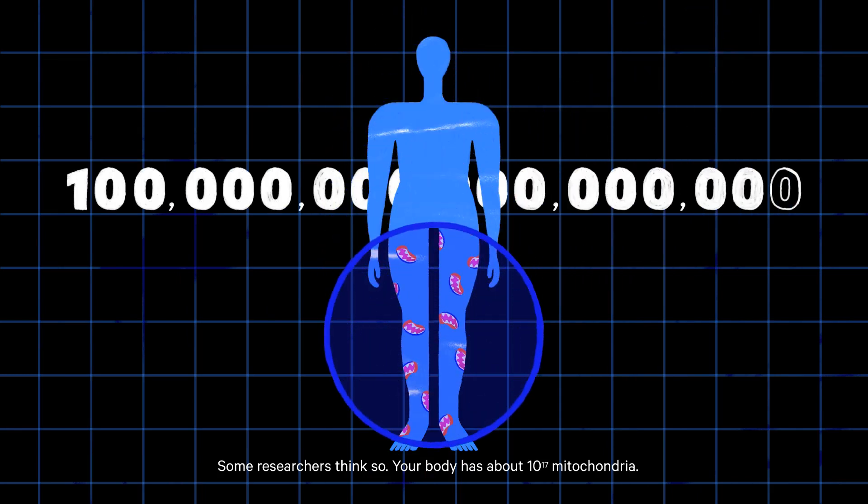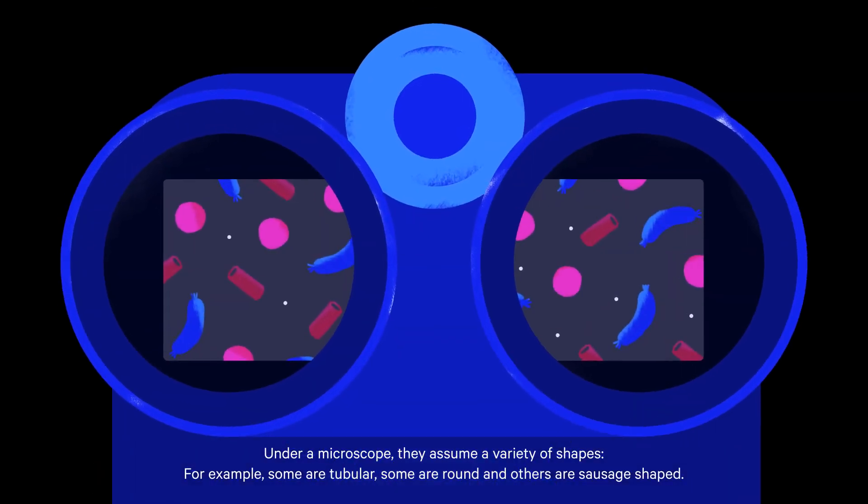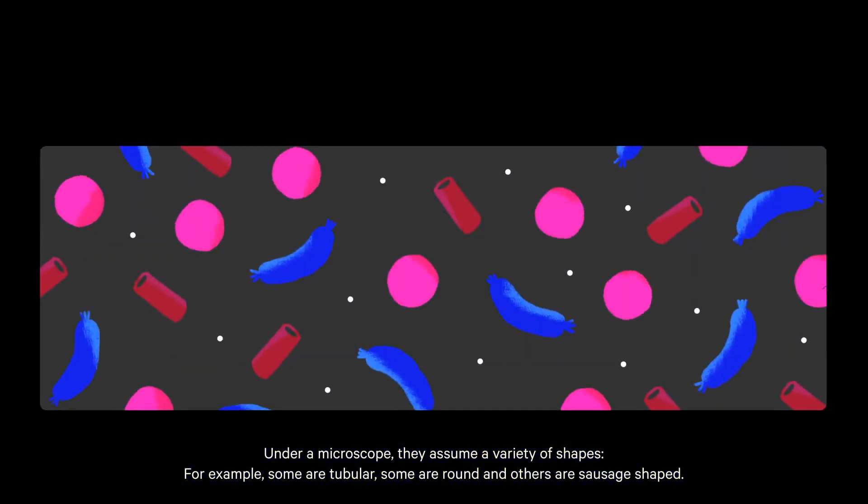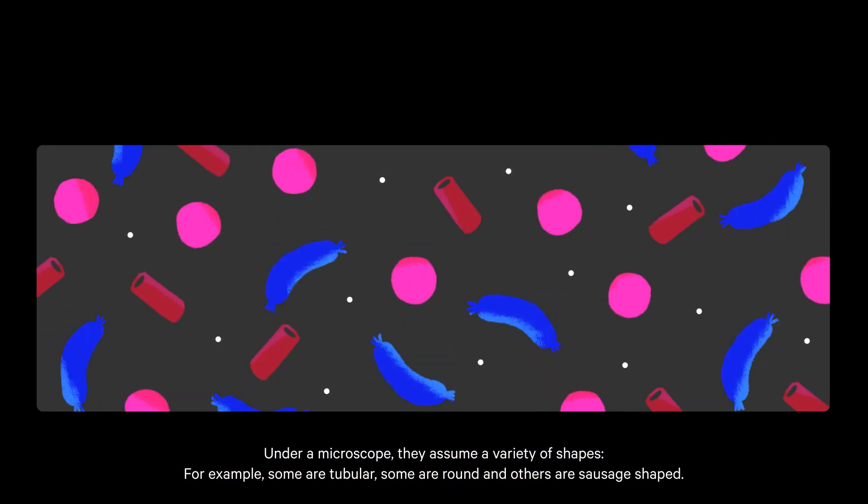Your body has about 10 to the 17th mitochondria. Under a microscope, they assume a variety of shapes. For example, some are tubular, some are round, and others are sausage-shaped.